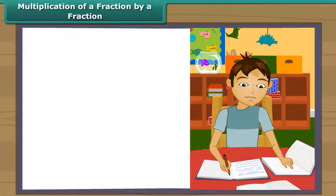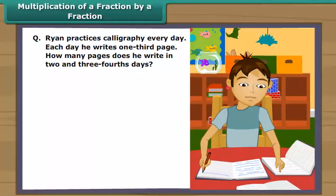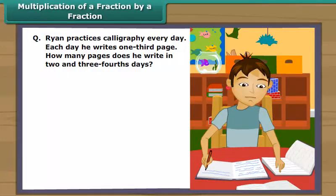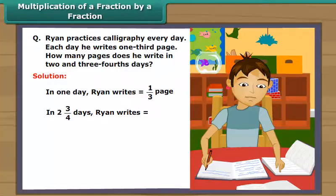Multiplication of a fraction by a fraction. Ryan practices calligraphy every day. Each day he writes one third of a page. How many pages does he write in two and three-fourths days? The part of the page written by Ryan in one day is equal to one third. So the part of the page written by Ryan in two and three-fourths days is equal to one third multiplied by two and three-fourths.